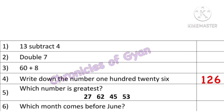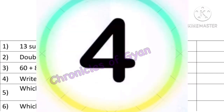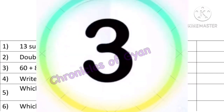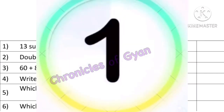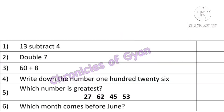Question 5: Which number is greatest? Is it 27, 62, 45, or 53? Among these 4 numbers, we have to look at the tens place. 62 is the biggest number, so the answer is 62.